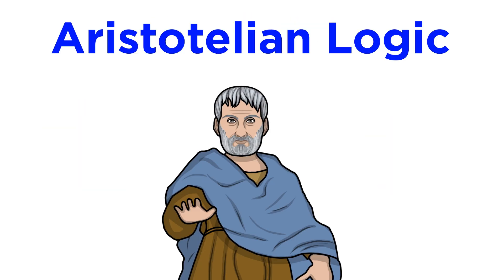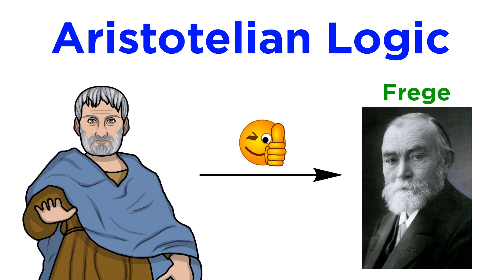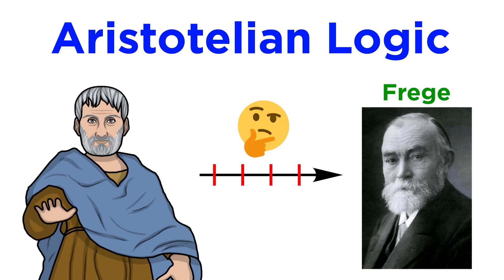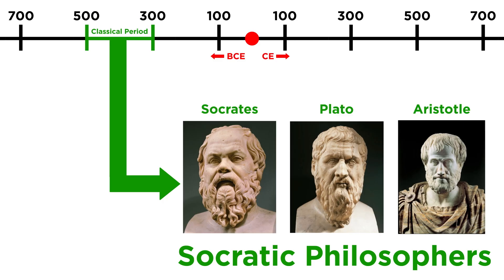Hopefully we now have a greater understanding of how logic first operated at its birth. This formulation went largely unchallenged until Frege's overhaul only about a hundred years ago, which we will examine later in the series. Of course, many details and minor concepts were worked out throughout history, and we will periodically come back to this topic as we study the development of philosophy itself. For now, let's return to our timeline and continue examining the history and evolution of philosophy.